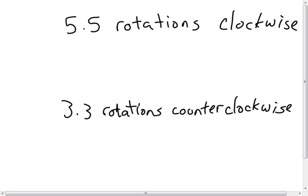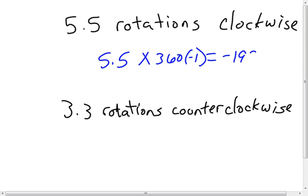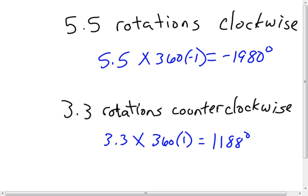We're also talking about rotations on the coordinate plane. The key thing to understand is whether it's a clockwise or counterclockwise rotation — clockwise is negative, counterclockwise is positive. For the first problem, since the rotation is clockwise, it's negative. We take the number of rotations times 360, times negative 1: that gives negative 1980 degrees for 5.5 clockwise rotations. For counterclockwise, it's positive: 3.3 times 360 equals 1188 degrees for 3.3 counterclockwise rotations.